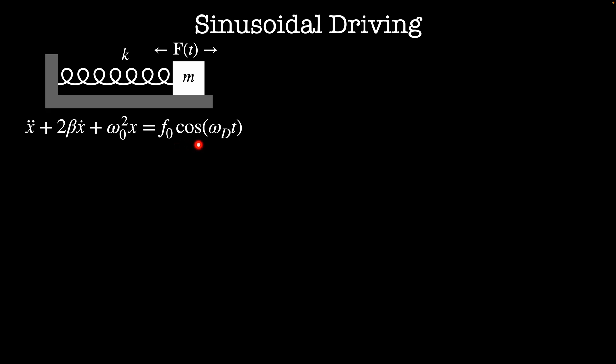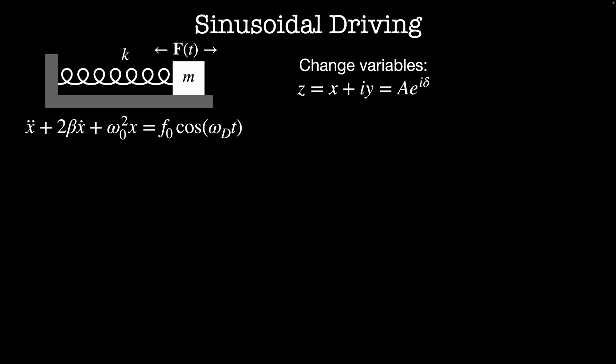Let's imagine a special type of driving force: sinusoidal driving. That means my driving force is proportional to cosine omega_d t, where omega_d is the driving frequency. The equation of motion is then x double dot plus 2 beta x dot plus omega naught squared x equals f naught times cosine omega_d t. Instead of looking at just the real part cosine omega_d t, we'll consider the whole complex exponential. I'll use a change of variables so that z equals x plus iy, which lets us take advantage of the geometry of the complex plane.